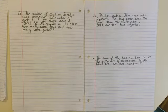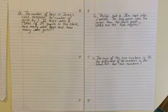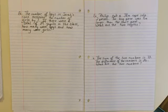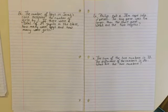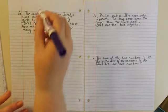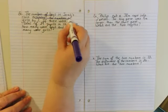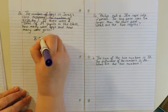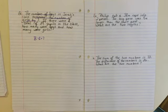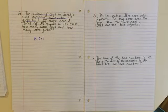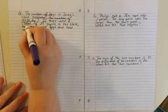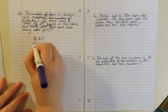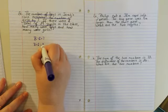Let's try another one. The number of boys in Sarah's class exceeded the number of girls by seven. If there were a total of 29 pupils in the class, how many were boys and how many were girls? We know that the number of boys exceeded the number of girls by seven, so boys equals girls plus seven. Or you could say boys minus seven equals girls. We know there is a total of 29 pupils, so boys plus girls equals 29.